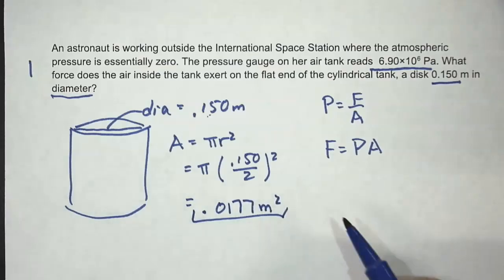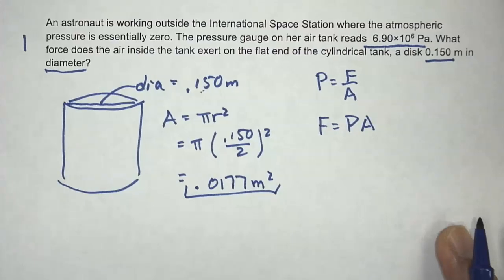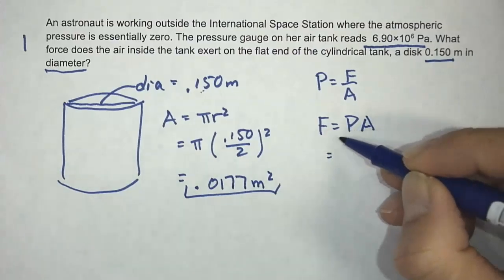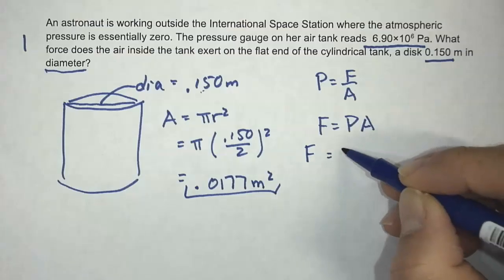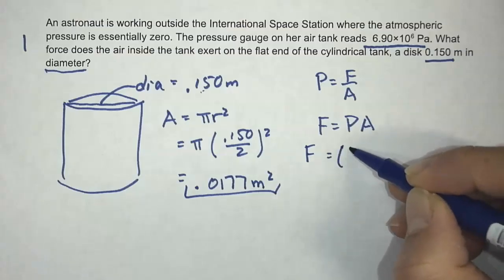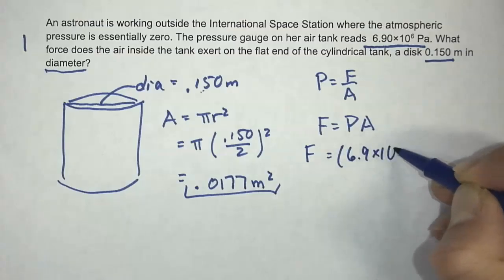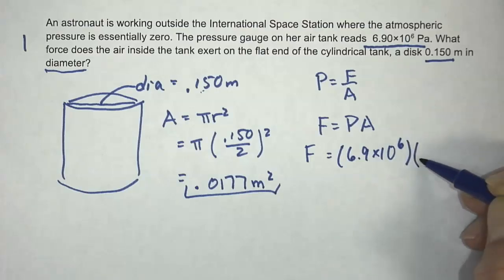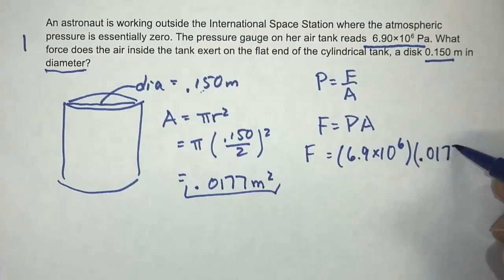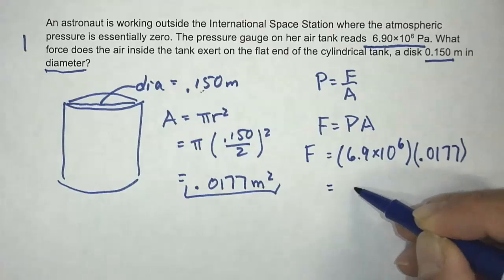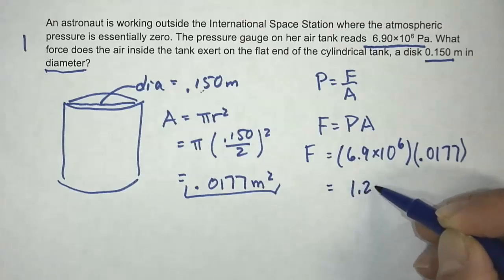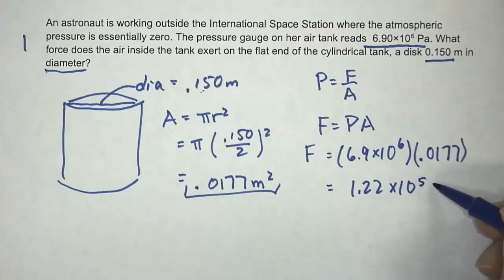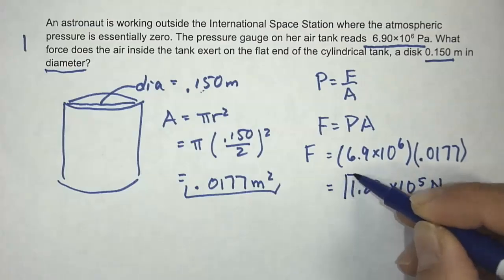Now I'll plug in the values. The pressure is 6.9 times 10 to the 6th, and the area is 0.0177. We get 1.22 times 10 to the 5th newtons.